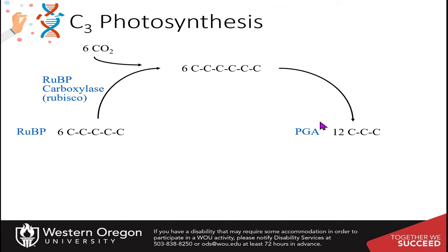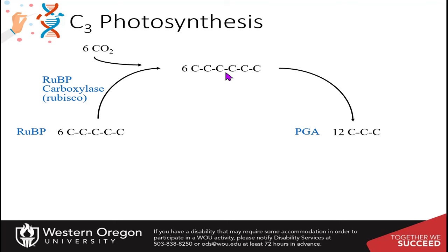We then generate molecules of 3-phosphoglycerate from the spontaneous decomposition of that 6-carbon molecule generated during the carboxylation event. If you divide six of these in half, you'll end up getting 12 three-carbon units.